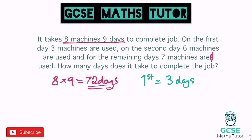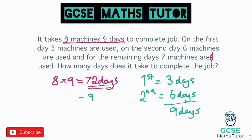So day one accounts for three of the 72 days of work. On the second day, six machines are used — one actual day but six days' worth of work. In total we've done nine days' worth of work across those two days. Taking nine away from 72 leaves us with 63 days of work still to be completed.